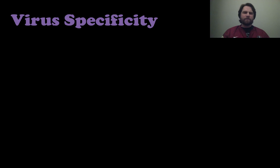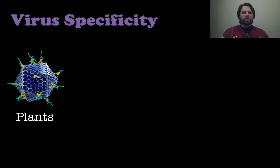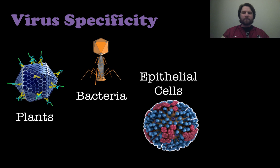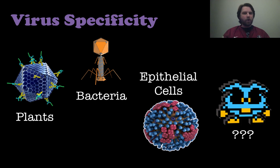So virus specificity means that certain viruses only infect certain organisms or certain types of cells. For example, there may be viruses that only affect plants and not other organisms. There may be ones that affect only bacteria. There are even certain viruses that are specific to a cell type, like ones that infect epithelial cells. And then there are even viruses whose exact specificity we don't know, because they may infect multiple different types of cells or multiple different organisms.